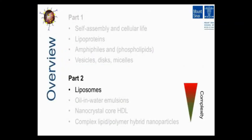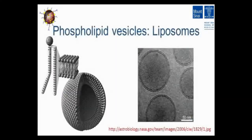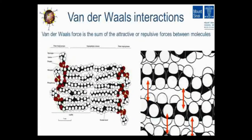Now I'll go to actual examples, starting with liposomes, and integrate how you synthesize them — what steps in the laboratory are involved. Liposomes are phospholipid vesicles. They can be unilamellar — having one phospholipid bilayer — or multilamellar with multiple bilayers. The reason these bilayers are really stable is because of van der Waals interactions between the acyl chains. Depending on what molecules you use, you can influence the stability of the phospholipid bilayer in the liposome.